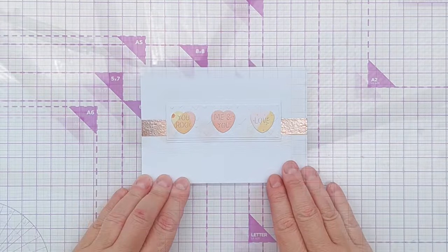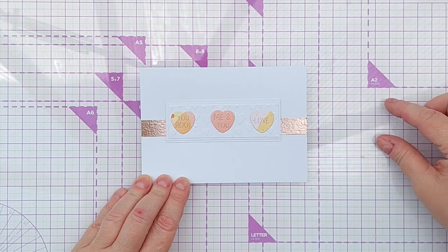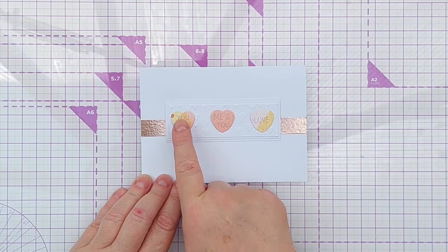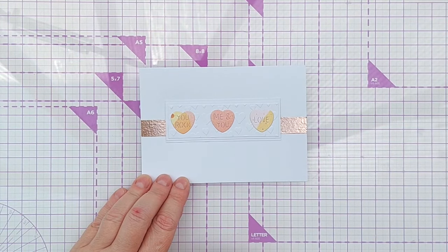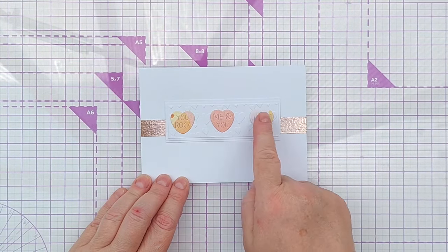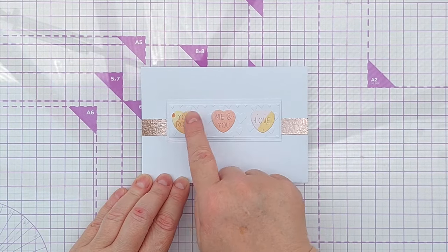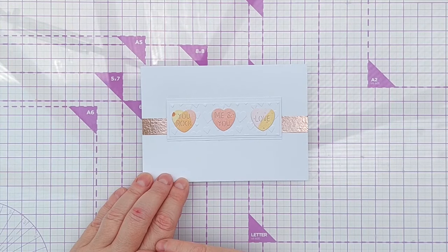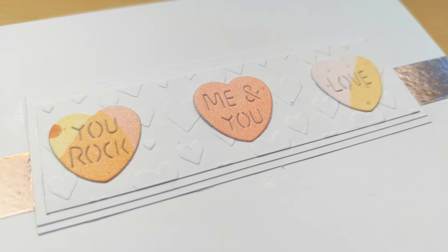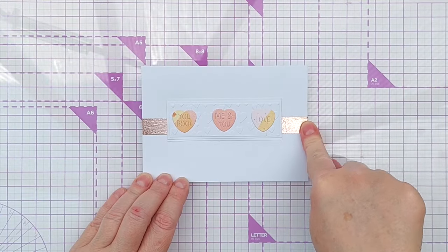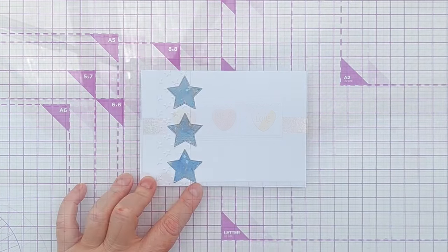For this one, I decided instead of portrait I would go landscape, and instead of going all the way across, I decided to build up a panel in the middle. I've got three not quite identical hearts. These have each got a sentiment embossed into them. For my panel behind, I used a heart embossing folder and then just mounted it on some other bits of white card, ran a strip of rose gold washi across the front and layered it on.